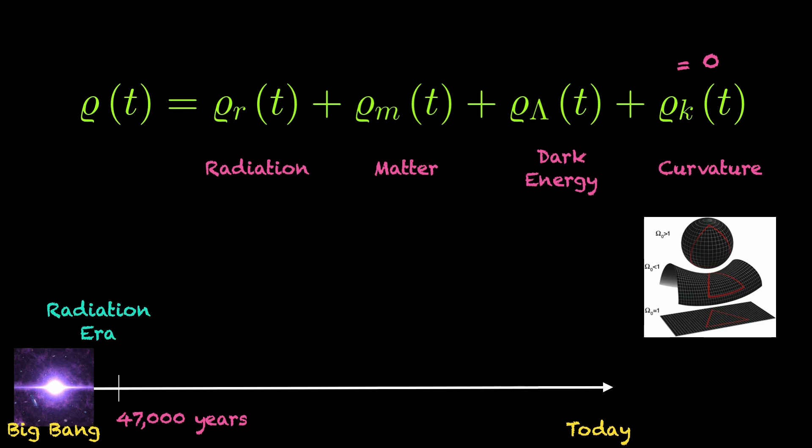But then, after 47,000 years, matter took over and kept control for almost 10 billion years. After all this time, dark energy came out of the dark, entered the chat, and since then is in charge of the universe. But for most of the time, since the Big Bang, the dominating force was matter. Dark energy only had an influence for about 4 billion years, as compared to the 10 billion years of matter.